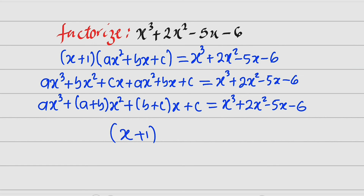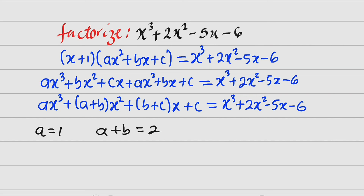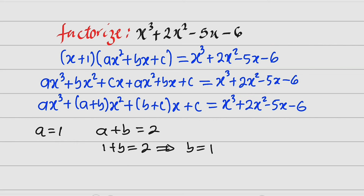So now let us relate the coefficients. The leading coefficient on the left is a, and on the right it is 1, so a equals 1. The coefficient of x squared on the left is a plus b, and on the right it is 2, so a plus b equals 2. Since a equals 1, substituting back gives 1 plus b equals 2, which implies b equals 1. And we can see that c equals negative 6, because those are the constants. So now we have obtained a, b, and c, and we go ahead and plug them back into the expression.